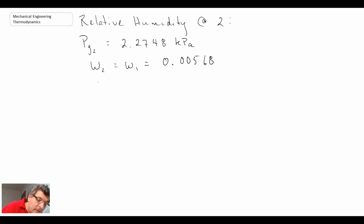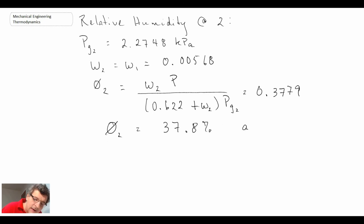With that, we can then directly evaluate the relative humidity at point 2. The relative humidity at point 2 turns out to be 37.8%, and that is the answer to part A. Notice with heating, we went from 70% down to 37.8%. So it was dropping as a result of the heating.